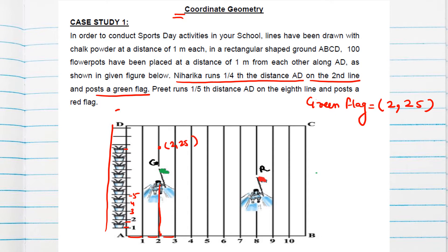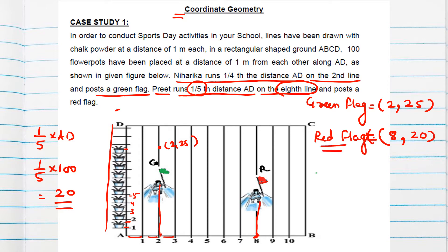Now Preet runs one-fifth distance AD on the eighth line, and she is posting a red flag. The eighth line means the x-coordinate will be 8, and she runs one-fifth of AD. We know AD length is 100, so one-fifth means 20. So at the 20th flower pot she posted her red flag. The position of red flag is (8, 20).